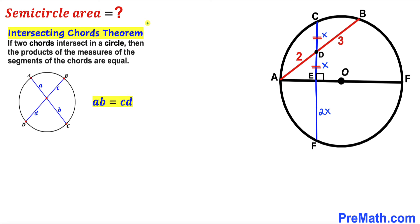Now let's recall the intersecting chords theorem: if two chords intersect in a circle, then the product of the measures of the segments of each chord are equal. As you can see in this diagram, chords AC and BD intersect such that segment A times segment B equals segment C times segment D.